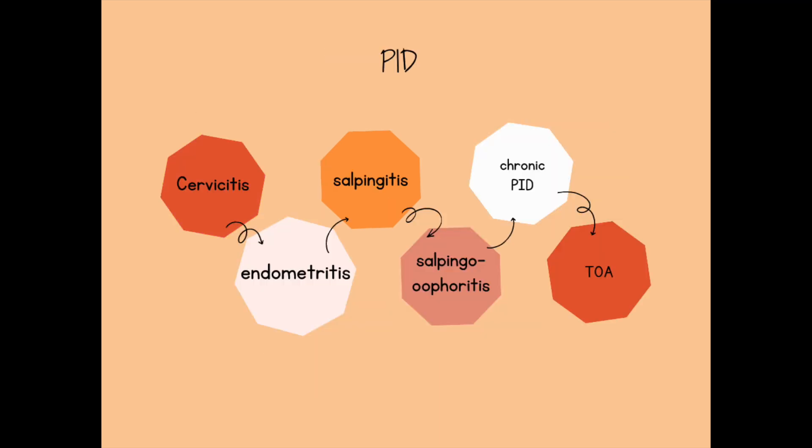Typically, PID spreads along the mucous membranes by ascent from the vulva, the cervix, the endometrium, to the adnexa and the fallopian tubes.